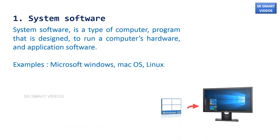System software is a type of computer program that is designed to run a computer's hardware and application software. Examples of system software are Microsoft Windows, Mac OS, and Linux.